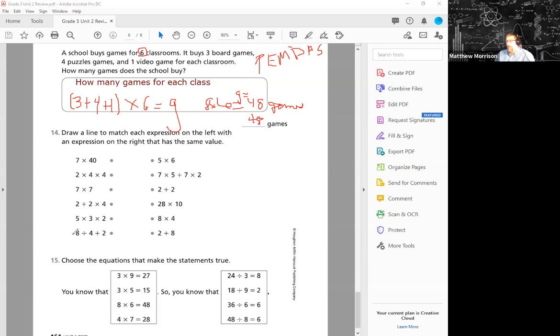Alright, almost there. Hang in there. We can do this. So we have: draw a line to match each expression on the left with the expression on the right that has the same value. So I look here and I look here. I have to find ones that have the same answer. I would probably recommend you just do the math for each one.